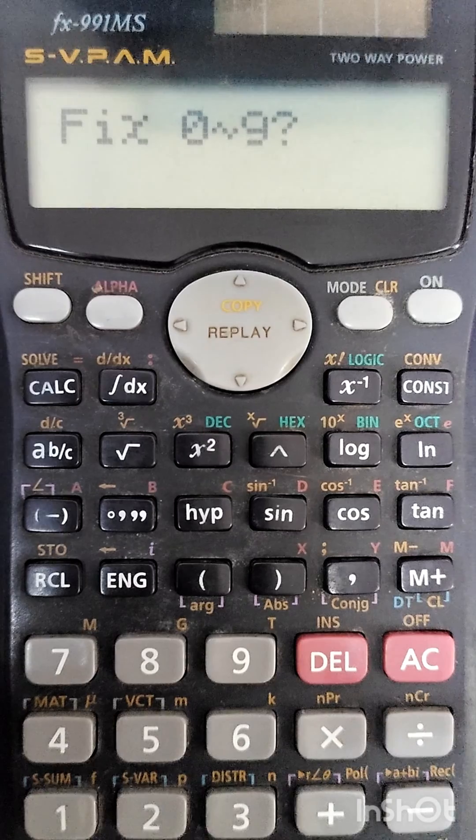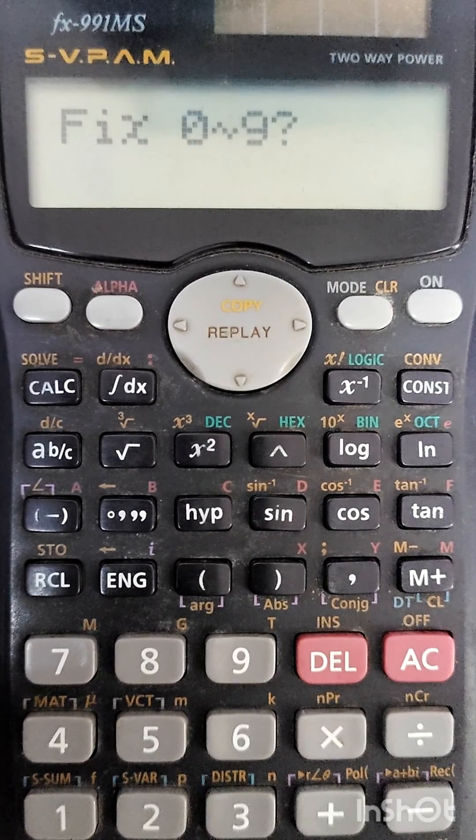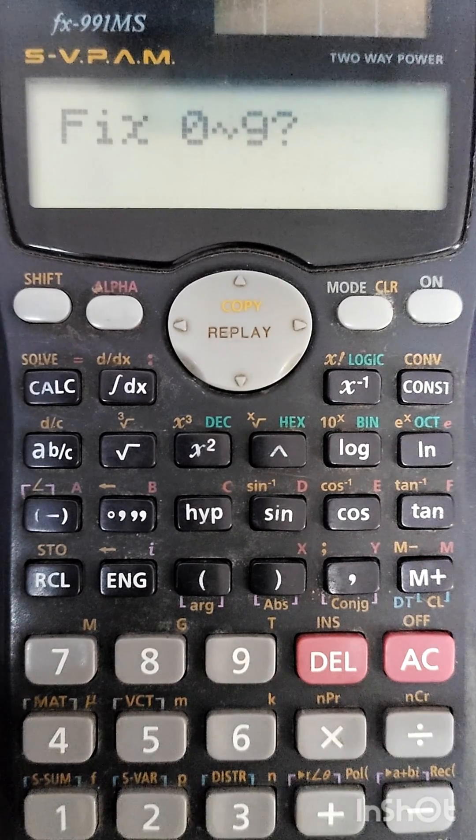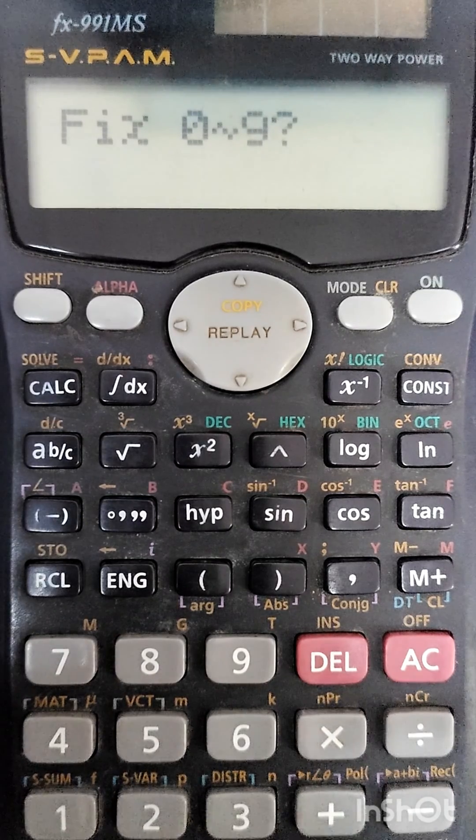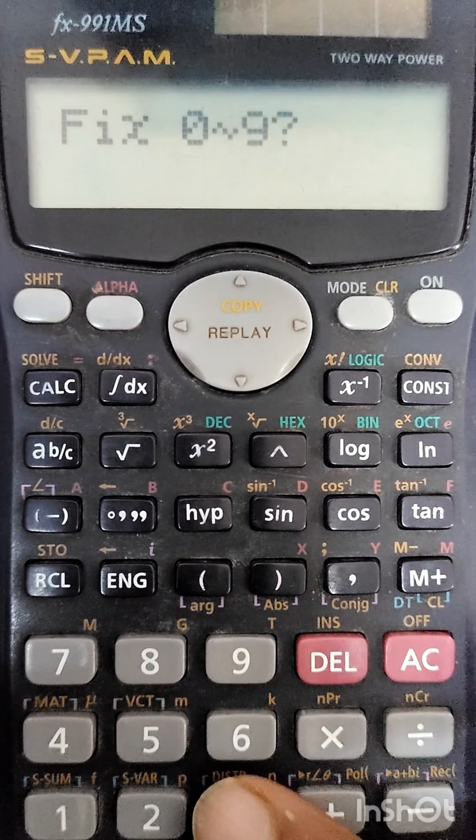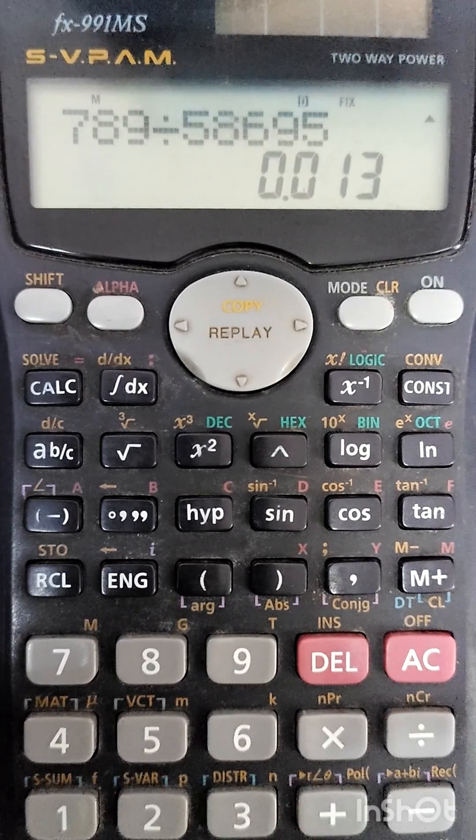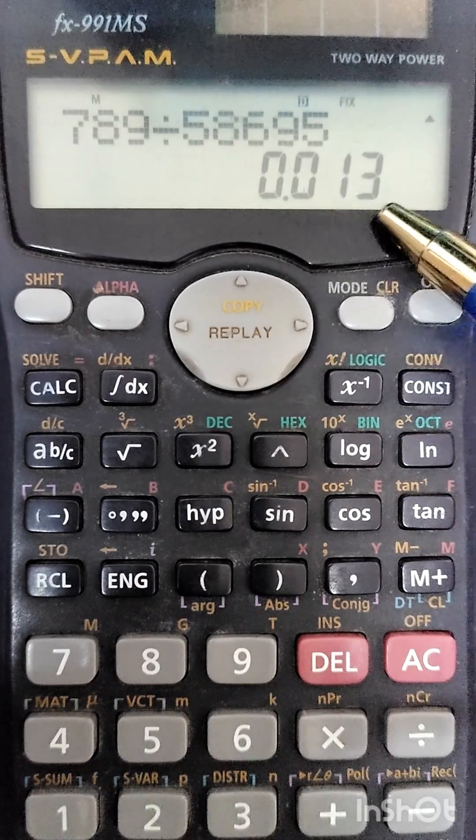Upon clicking one, the calculator asks us: after decimal, how many values do we want? For now, let's set it to three decimal places, so I'll click three here. And you will see now we have three numerical values after our decimal.